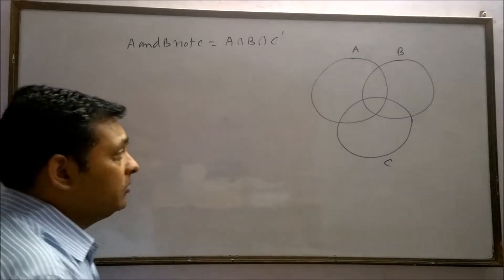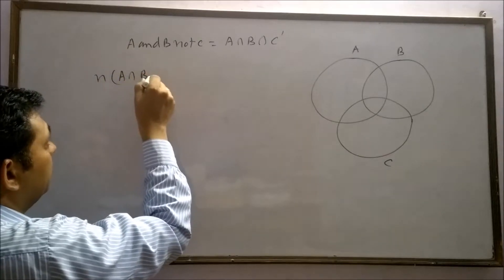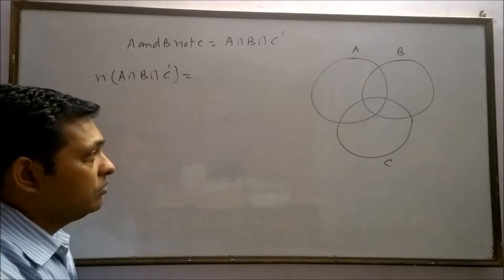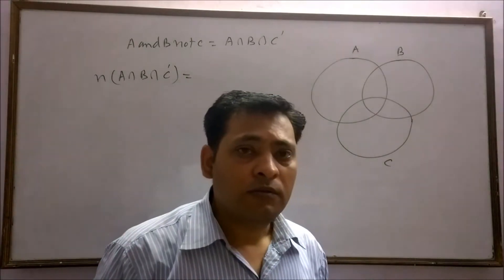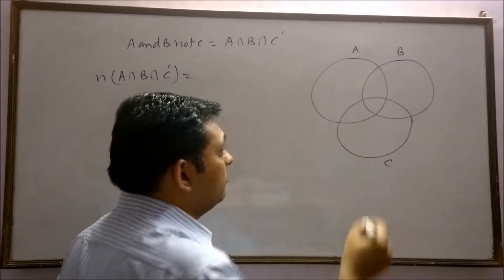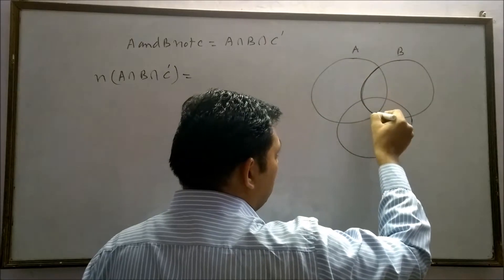This means A intersection B intersection C complement will equal to... Our requirement is elements of A and B. Elements of A and B are found in this region.